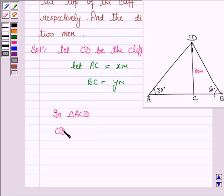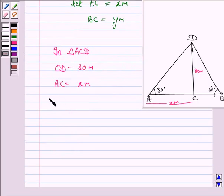In triangle ACD we have CD is equal to 80 meter, AC is x meter. This is a right angles triangle.